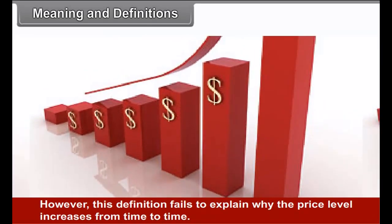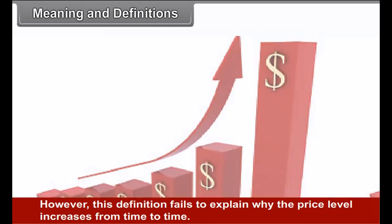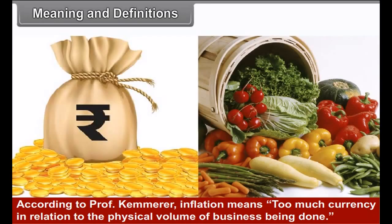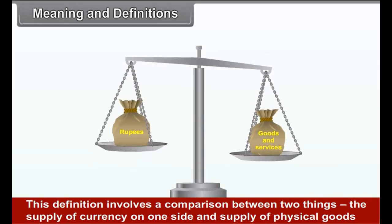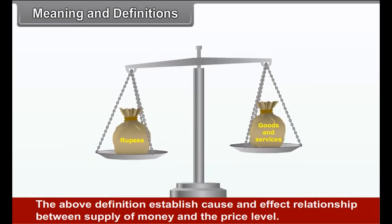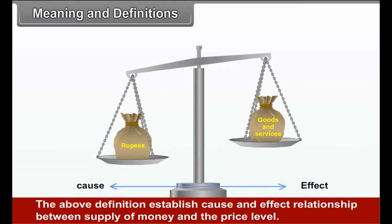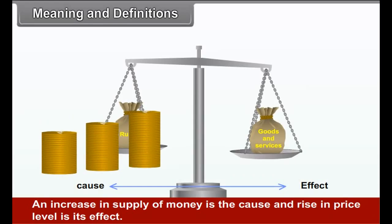However, this definition fails to explain why the price level increases from time to time. According to Prof. Camerer, inflation means too much currency in relation to the physical volume of business being done. This definition involves a comparison between the supply of currency on one side and the supply of physical goods and services on the other. These definitions establish a cause-and-effect relationship: an increase in supply of money is the cause, and rise in price level is its effect.